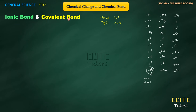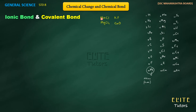Let's start with sodium chloride, which we call common salt. Its formula is NaCl and it is made of two elements: sodium (Na) and chlorine (Cl). We will understand how these two elements are bonded together to form NaCl, and similarly we will study MgCl2, KF, and CaO.